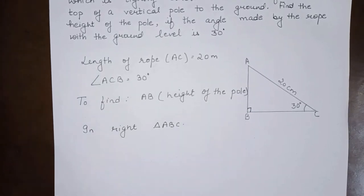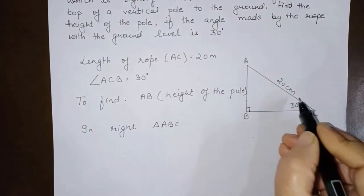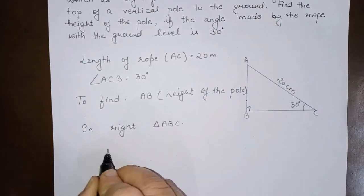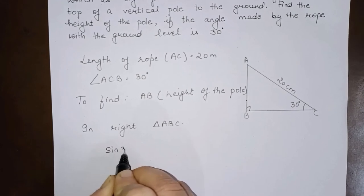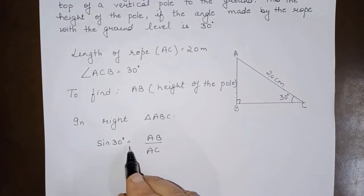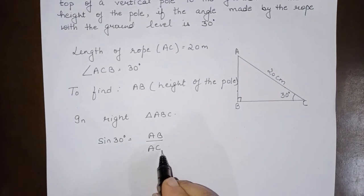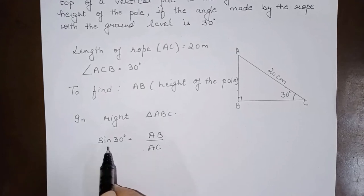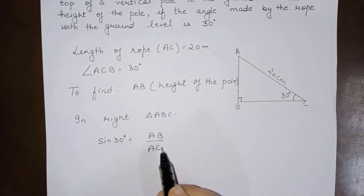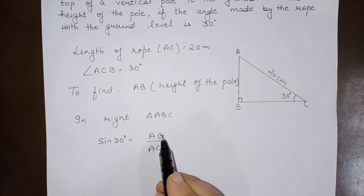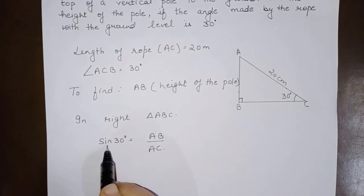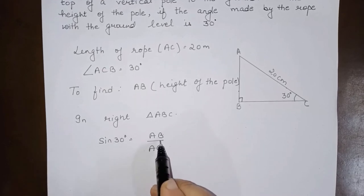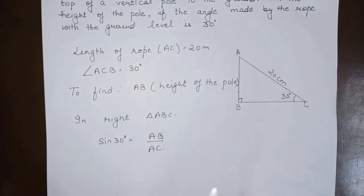...we have to find AB and AC is given, so we will write sine of 30 degrees equals AB over AC. We have to take the ratio of these two and we have to take the trigonometric ratio connecting the two sides which is given and which we have to find.